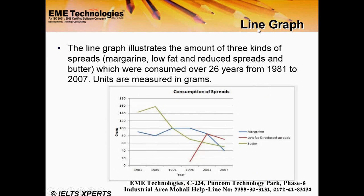Next is the line graph. In a line graph, you can describe increasing trends, decreasing trends, or ups and downs — which is called a fluctuation trend. You should explain whether it is a minimal increase, maximum increase, gradual increase, or decrease accordingly.